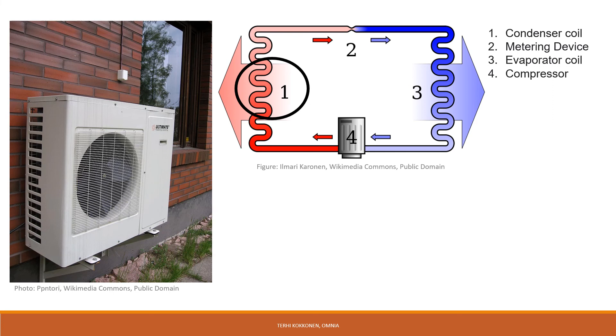In the condenser coil, refrigerant releases heat to its surroundings and becomes a liquid which is circulated to the evaporator coil. In the evaporator coil, the refrigerant absorbs heat from its surroundings and boils to become a low temperature vapor.